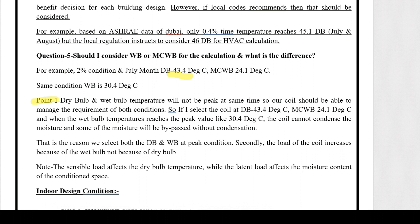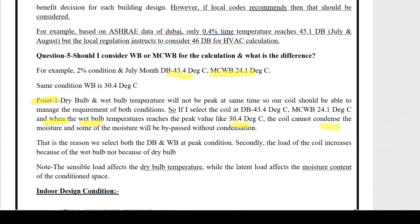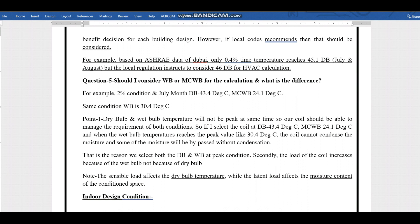If we select the coil at a dry bulb of 43.4°C with mean coincident wet bulb of 24.1°C, then when the wet bulb reaches its peak value of 30.4°C, the coil cannot condense — some moisture will bypass without condensation. That's the reason we select the design dry bulb and design wet bulb at their peak conditions. The sensible load is affected by dry bulb temperature, and the latent load is affected by moisture content. This is why we select the design wet bulb rather than the mean coincident wet bulb.